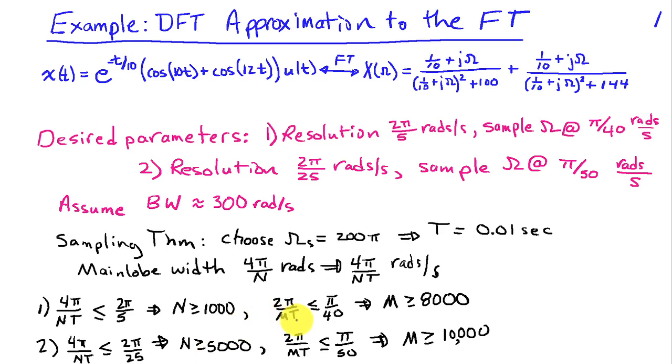As far as the frequency sampling goes, we want to sample at π/40 radians per second or better, and our frequency samples are spaced by 2π/(M·Δt), where M is the length of our DFT. Solving for M, we obtain that M has to be greater than or equal to 8,000. In the second case, where the frequency sampling has to be finer than π/50, we see that M has to be greater than or equal to 10,000.